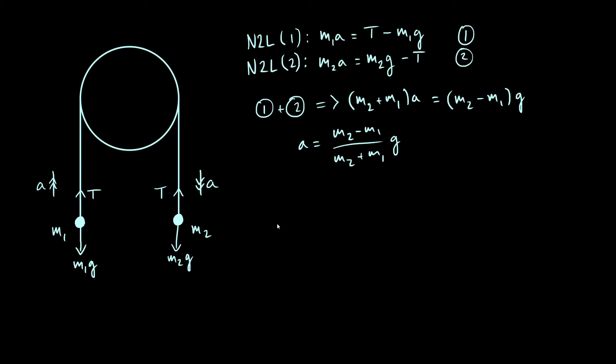Again, that's what we would expect, because if M1 is heavier than M2, then M1 is going to be the one that moves downwards. And finally, note that if M2 and M1 are exactly equal, the acceleration turns out to be zero because the system is perfectly balanced, so it's not going to move. So there you go, that's the acceleration.